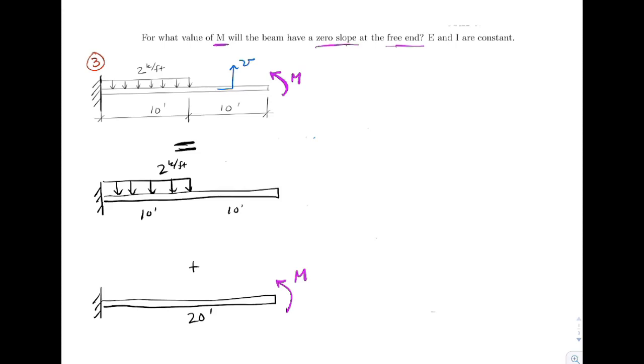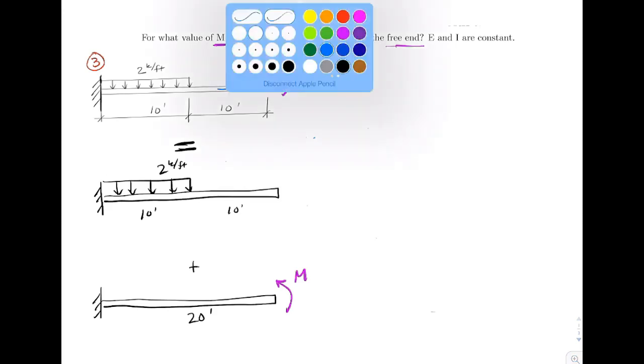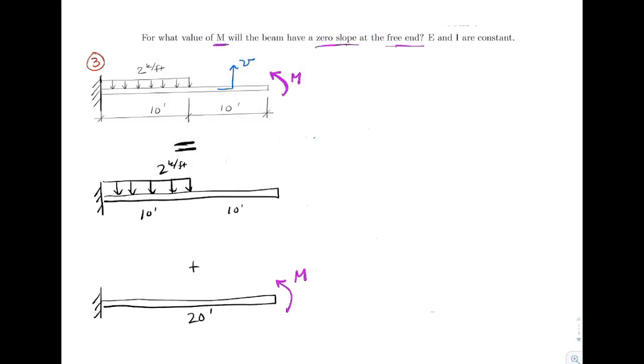So what we need is the slope at the end. So superposition tells me that anything in the actual is going to equal structure one plus structure two. And we'll put a coordinate system on here. So there's our x.